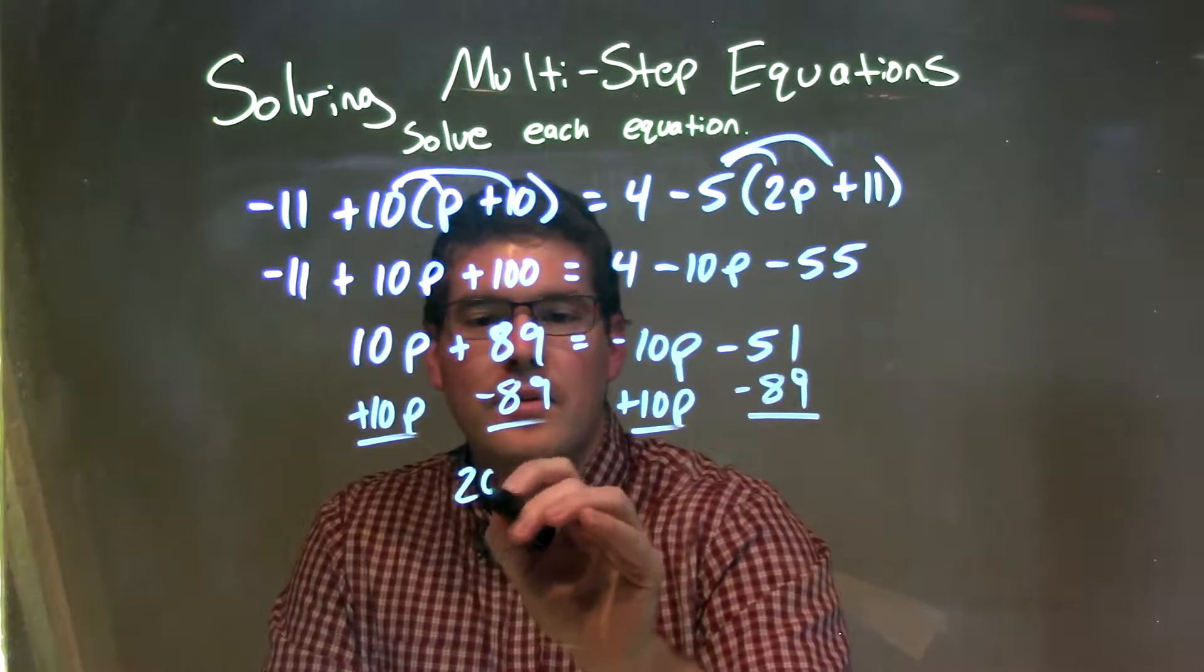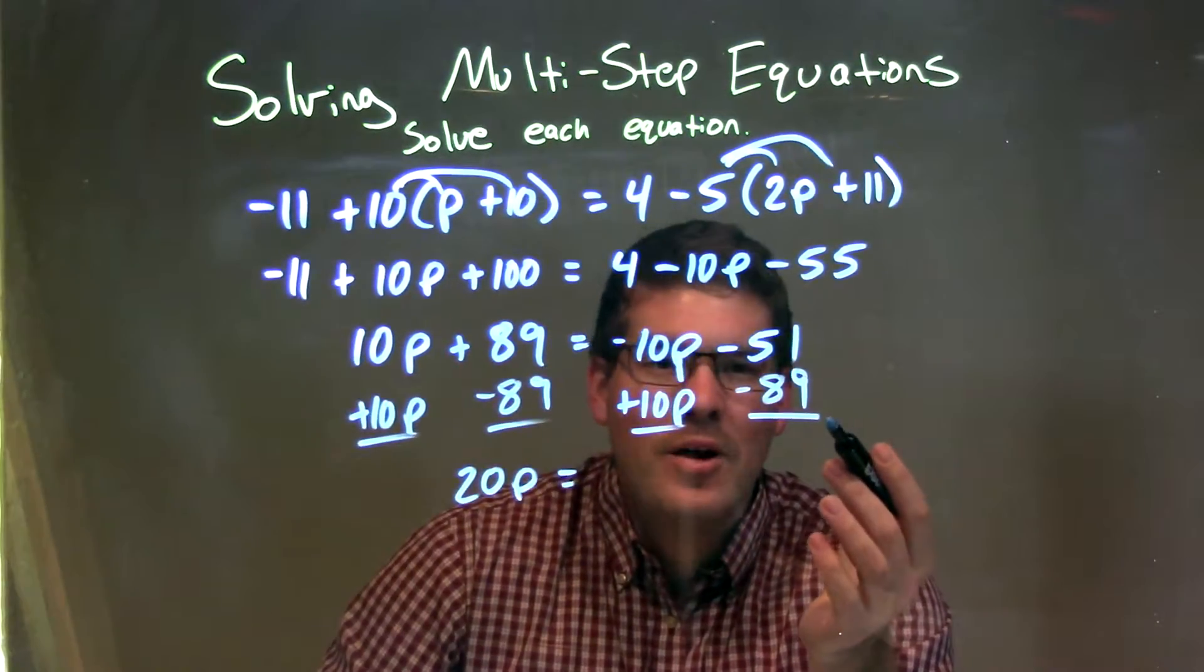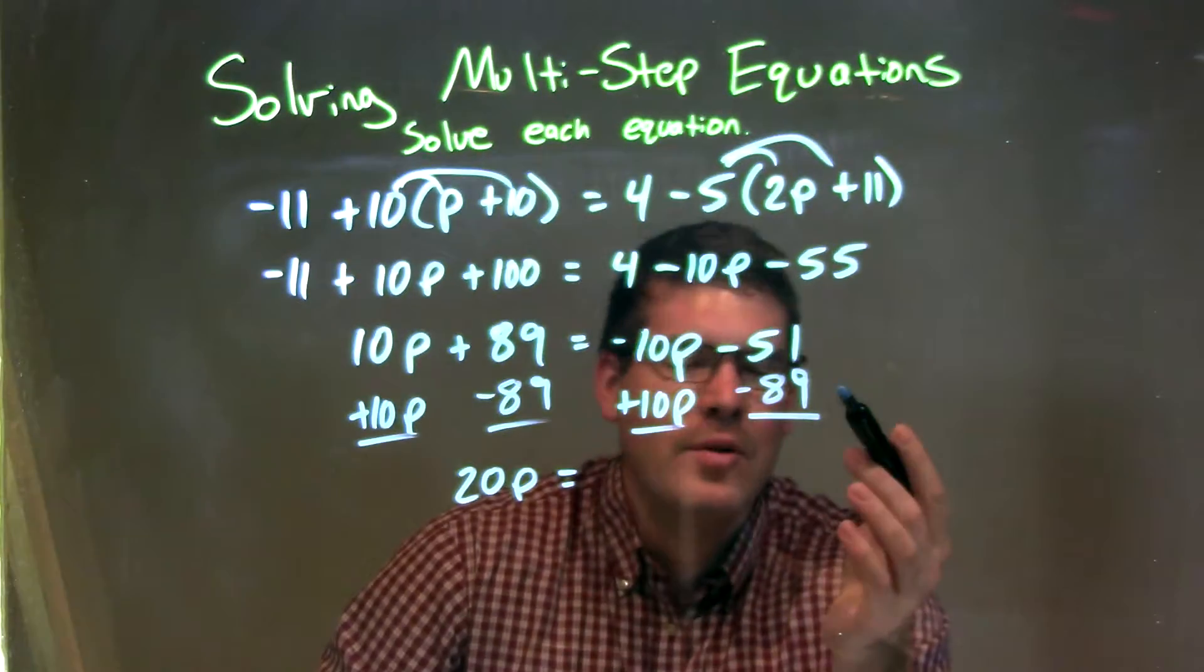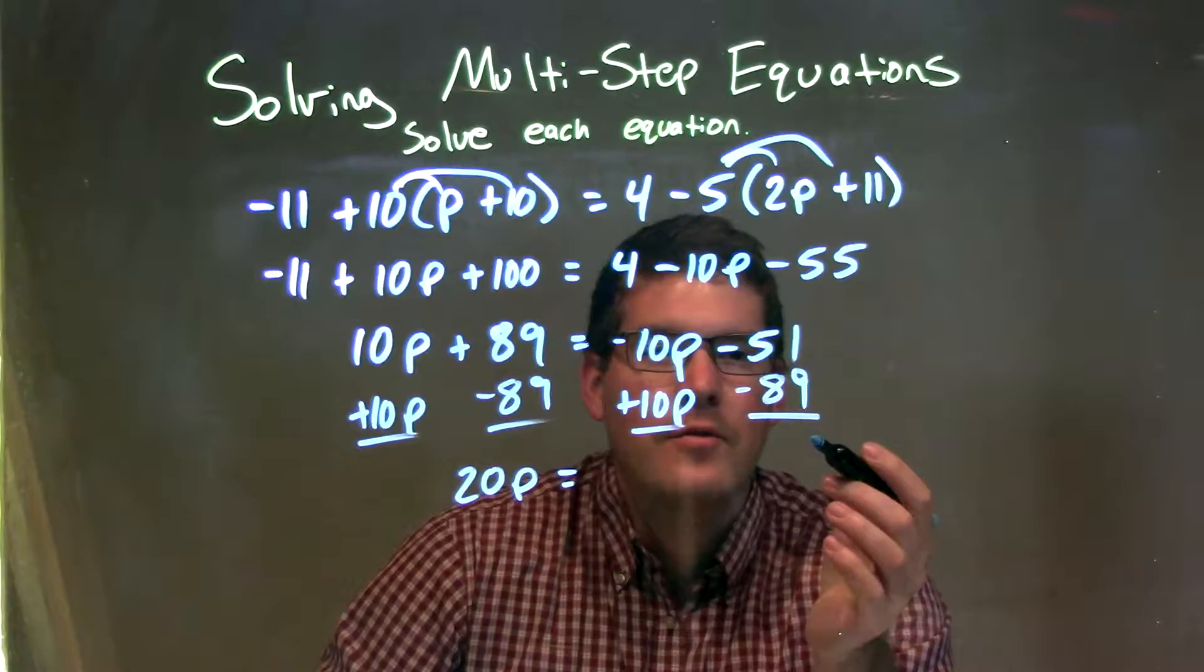10p plus 10p is 20p. And on the right-hand side, negative 51 minus 89 - well, 9 plus 1 gives us 10, carry the 1, and 140.